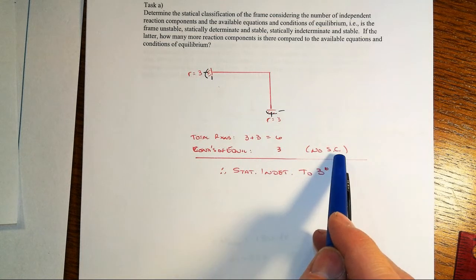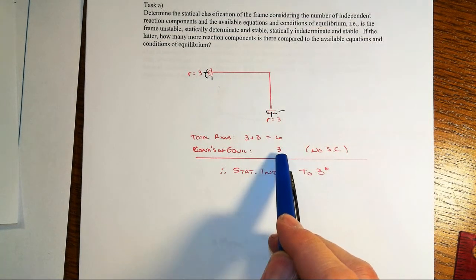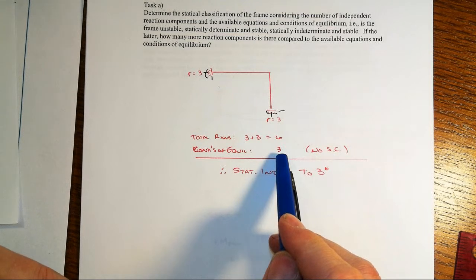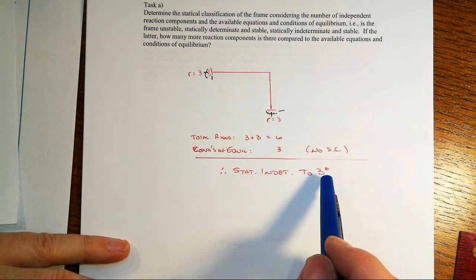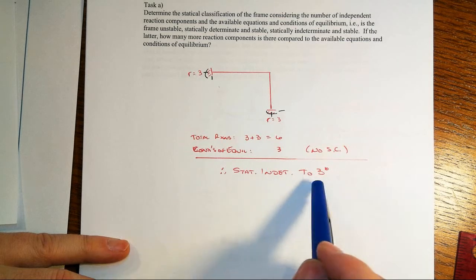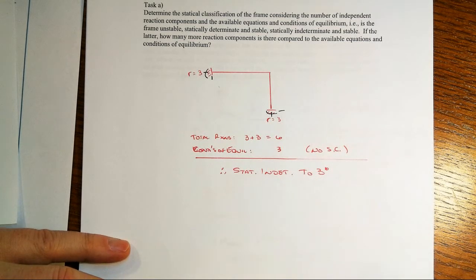But we don't have any releases, so therefore all we've got from equilibrium is just three conditions. And that means we've got three times more reaction components than the minimum that we need. That makes the system statically indeterminate to the third degree.